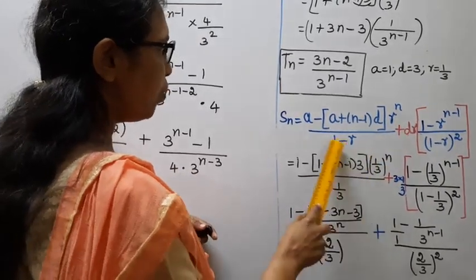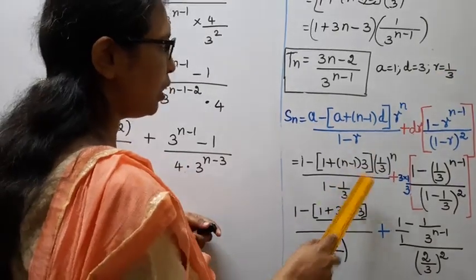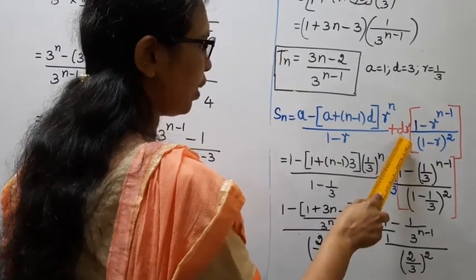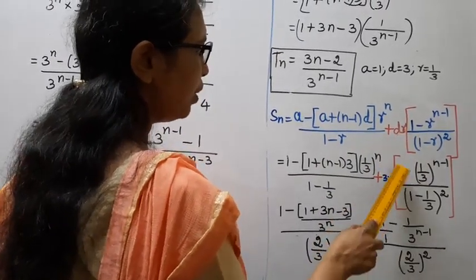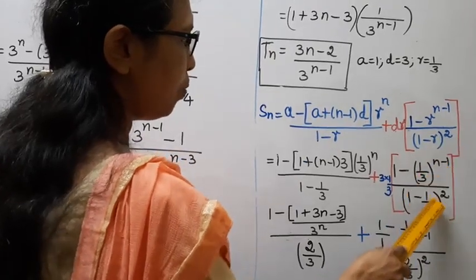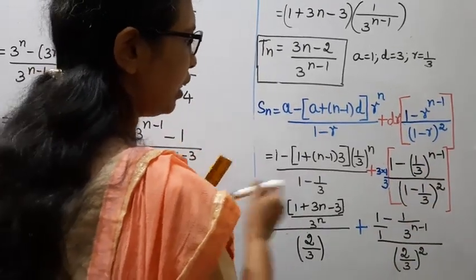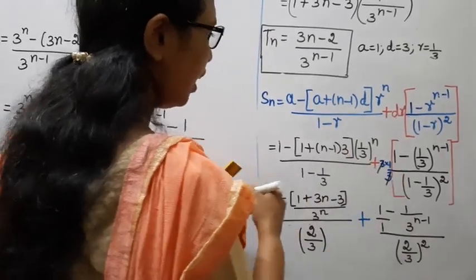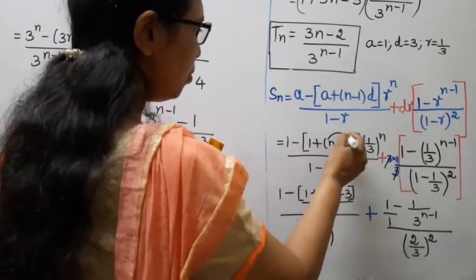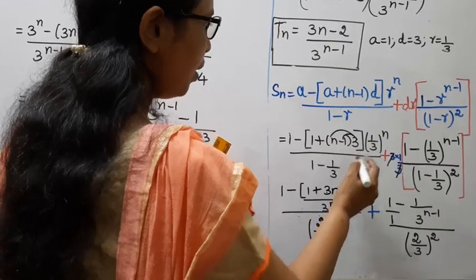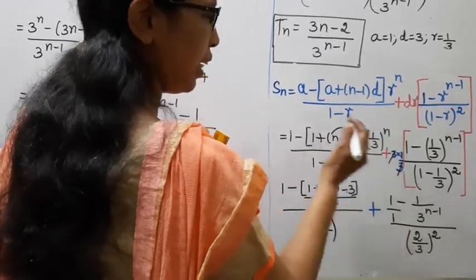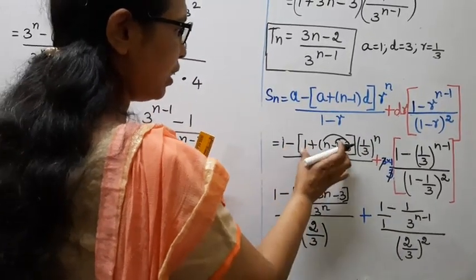Substituting a = 1, d = 3, r = 1/3 into the formula: Sn = 1 × [1 − (1 + (n−1)×3) × (1/3)^n] / (1 − 1/3) + 3 × (1/3) × [1 − (1/3)^(n−1)] / (1 − 1/3)^2. Note that 3 × (1/3) simplifies — the 3's cancel.